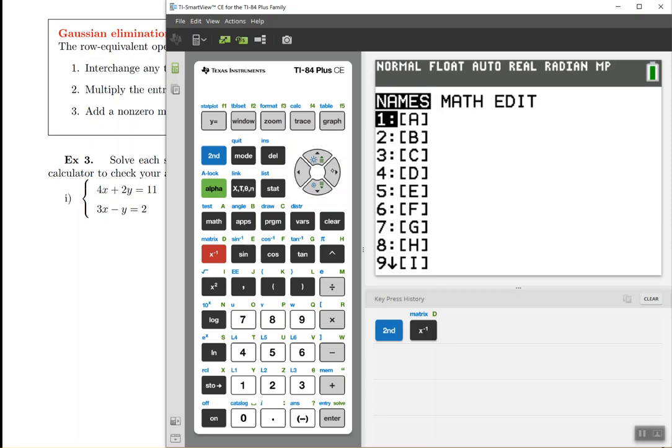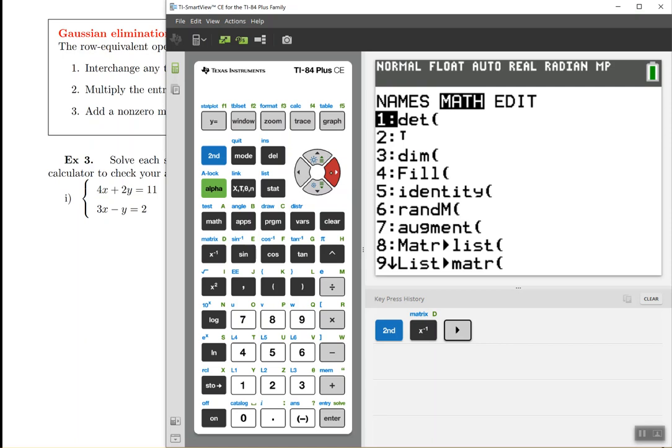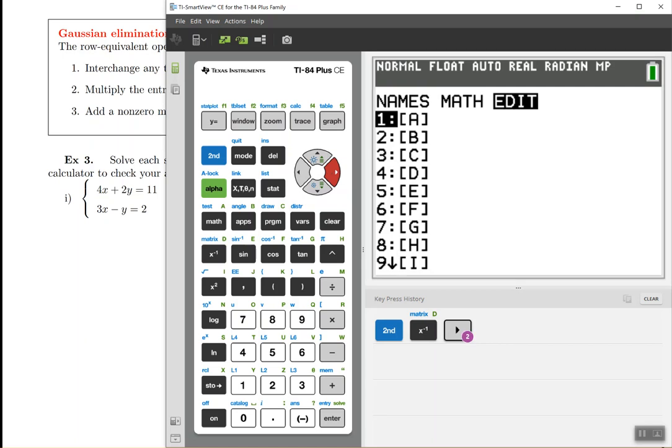So what we're going to do is go, after we enter the matrix menu, we're going to go twice to the right, to where it says edit, and pick any of those names that you want. These are different names, so you can have basically nine matrices saved in your calculator. I'm going to always pick the first option.